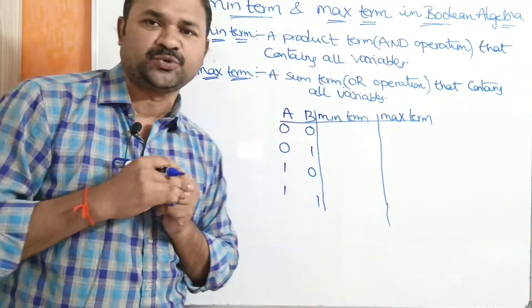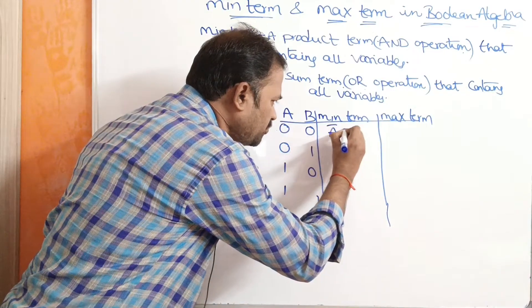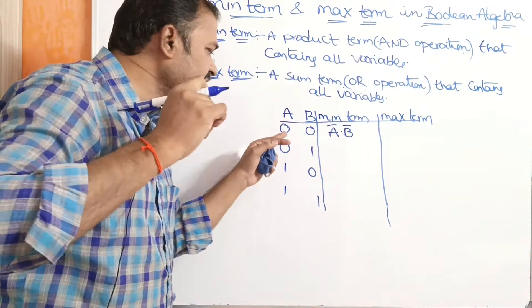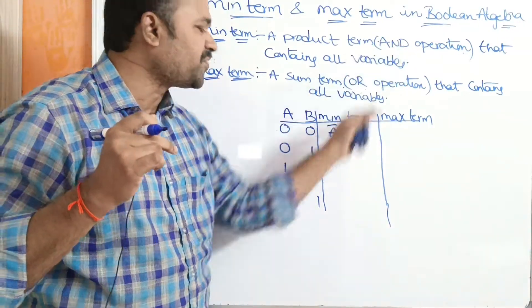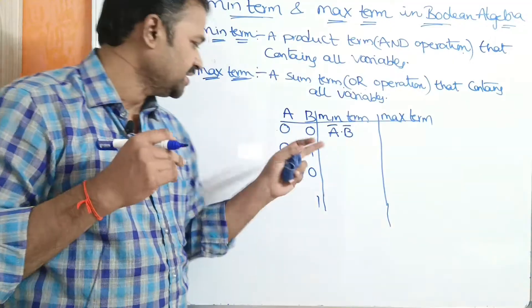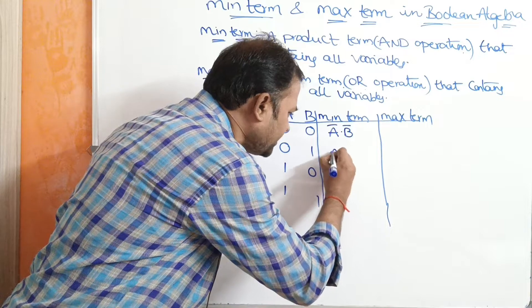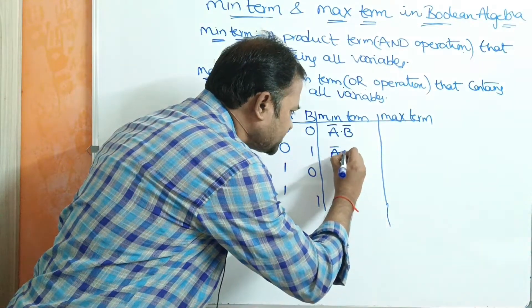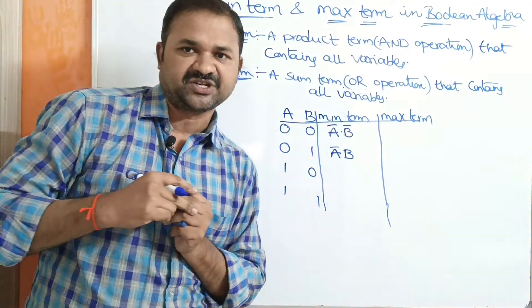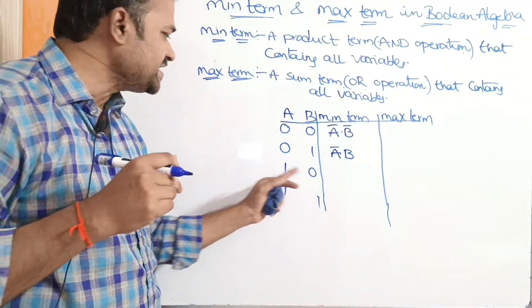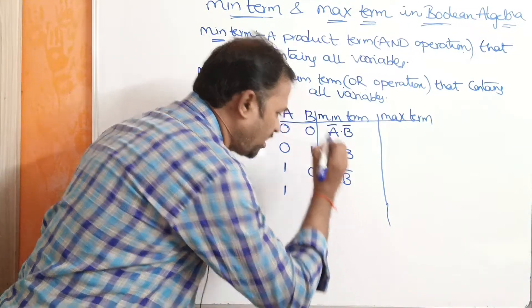For A=0, B=0: this can be written as A̅·B̅. For A=0, B=1: A is 0 means A̅, B is 1 means B. So we perform AND operation: A̅·B. Next, A=1, B=0 can be written as A·B̅.